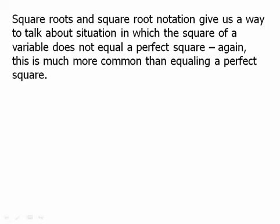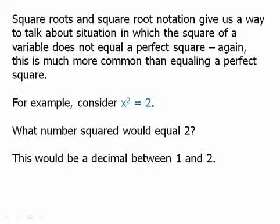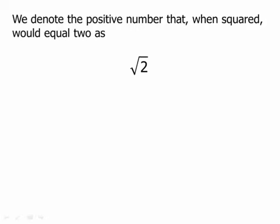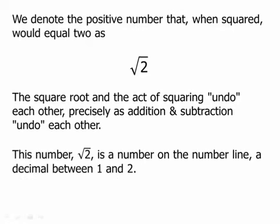This is much more common than equaling a perfect square. For example, consider x squared equals 2. What number squared would equal 2? This would be a decimal between 1 and 2. We denote the positive number whose square equals 2 using this notation — we read this either as the square root of 2 or radical 2. This number, radical 2, is a number on the number line, a decimal between 1 and 2, and it does live there between 1 and 2.